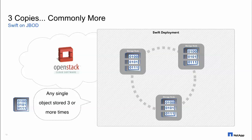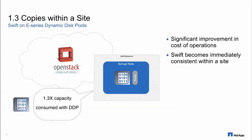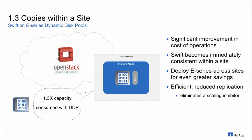Swift by default uses a consistent hashing ring that makes three copies within a single site, and more across multiple sites. A traditional RAID or parity scheme has long rebuild times, but since we've mitigated that with our dynamic disk pools technology, we're able to dramatically reduce storage consumption for a single object — going from 3x within a site down to 1.3x. That single site also becomes immediately consistent, resulting in significant reduction in cost of operation: power, cooling, floor space, and management.